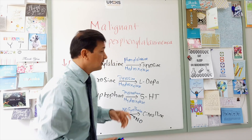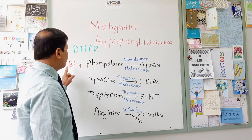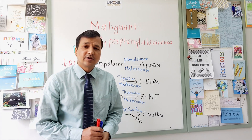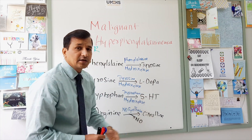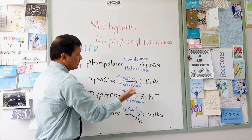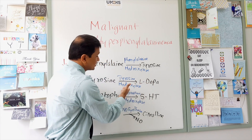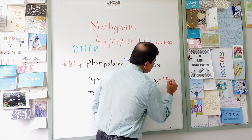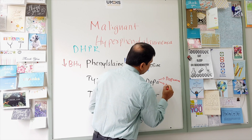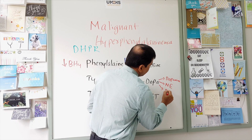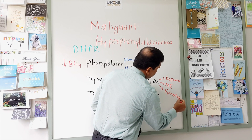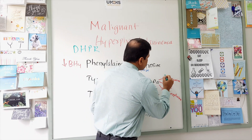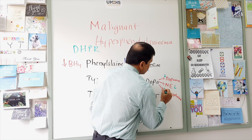In malignant hyperphenylalaninemia, because of the mutation in the DHPR gene, there is decreased availability of tetrahydrobiopterin, so all four enzyme activities go down. When tyrosine is not made in sufficient quantity, and tyrosine hydroxylase is also impaired, L-DOPA production falls. Without adequate L-DOPA, there is decreased synthesis of dopamine, which then leads to decreased norepinephrine and decreased epinephrine. All three of these catecholamine neurotransmitters are decreased because they all derive from L-DOPA.